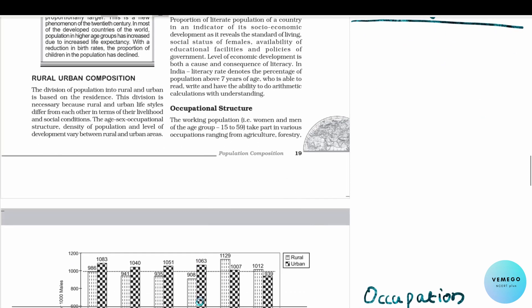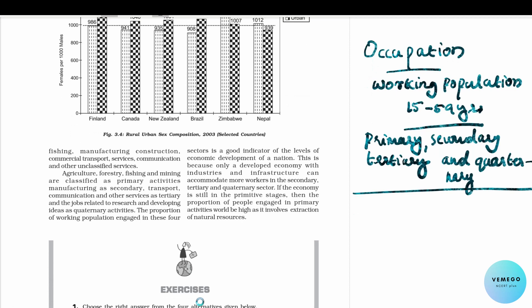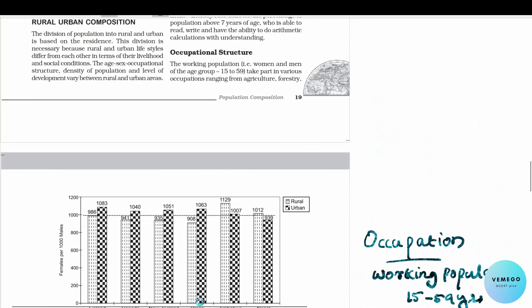Occupational structure refers to the working population. There are many people who are part of the working population and there are those who are not working. Fishing, agriculture and forestry are primary activities.